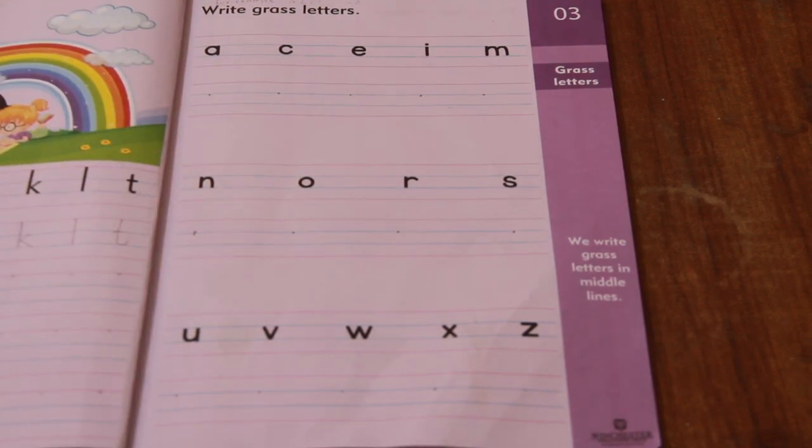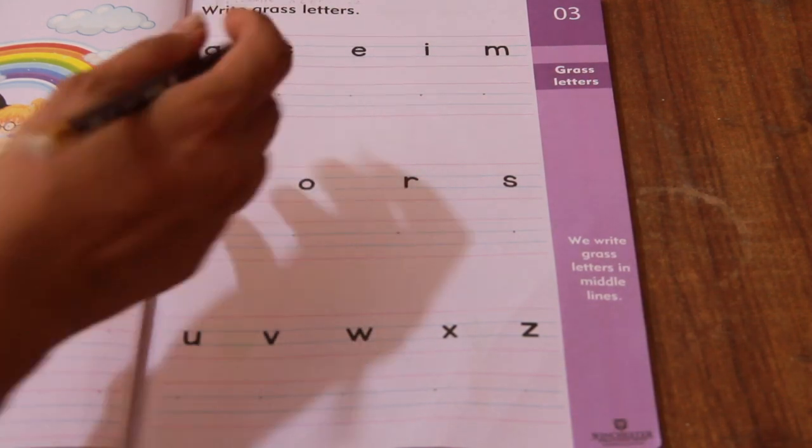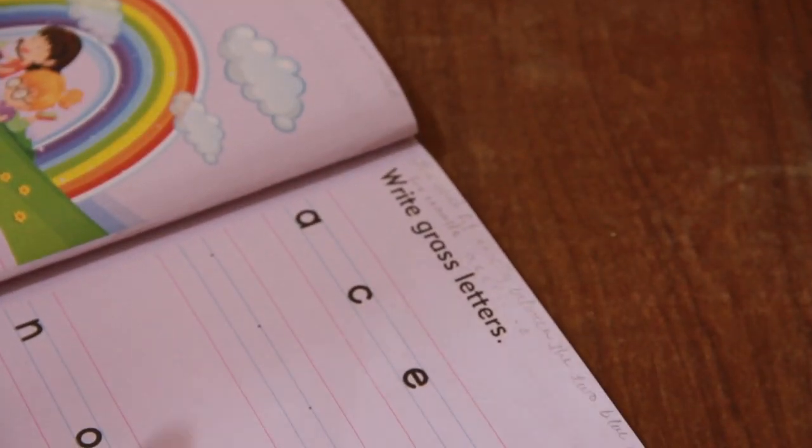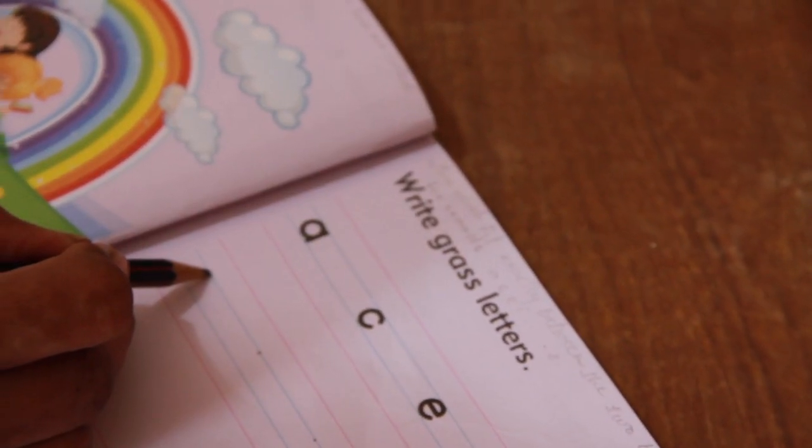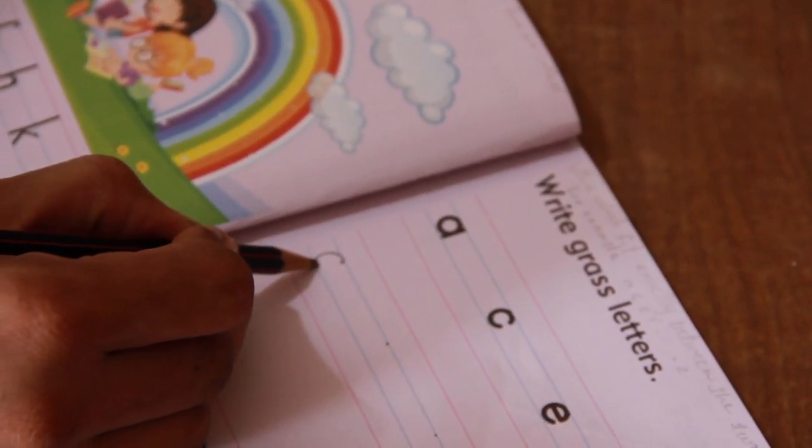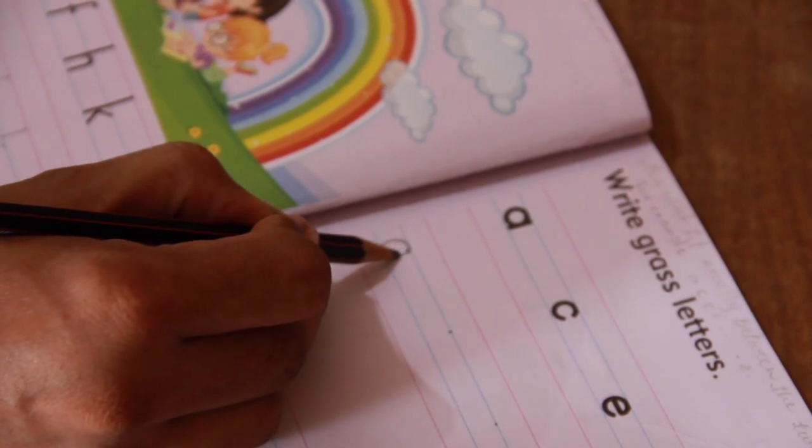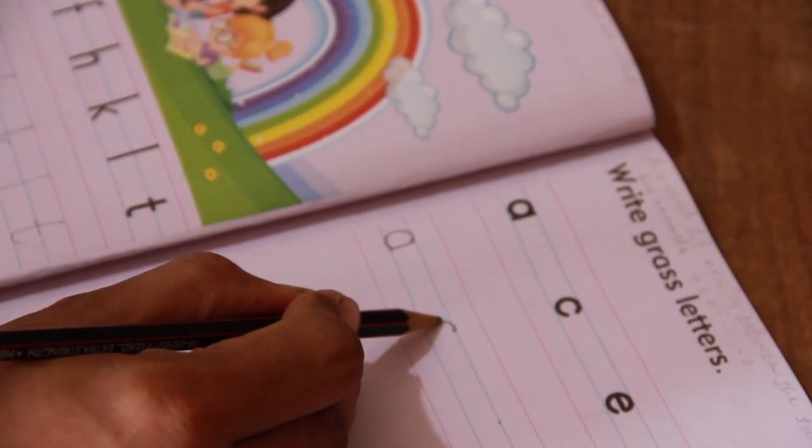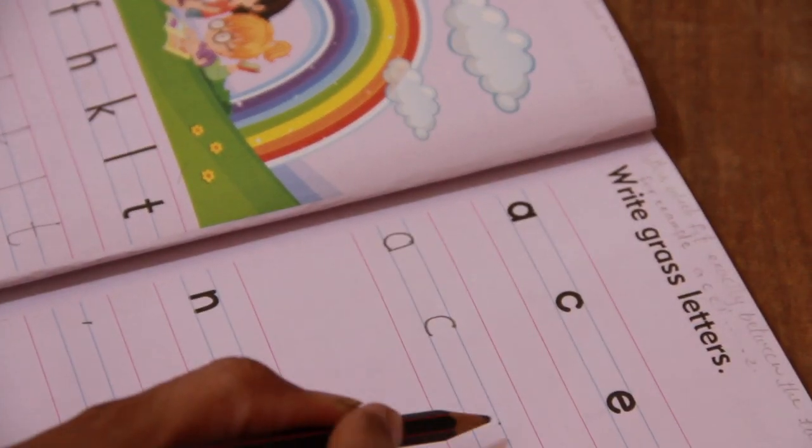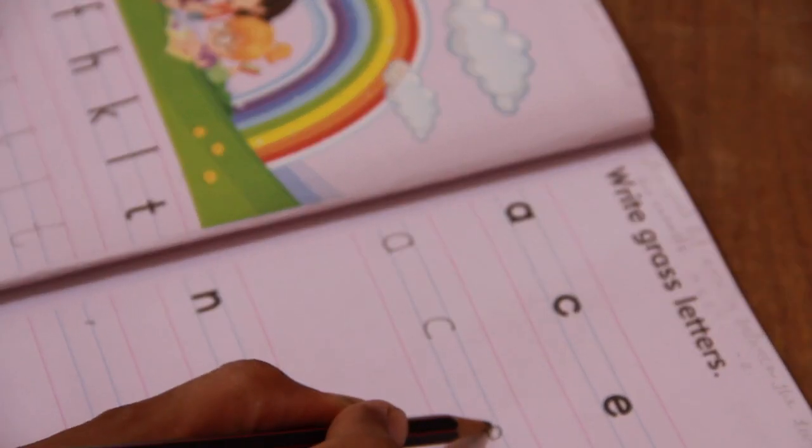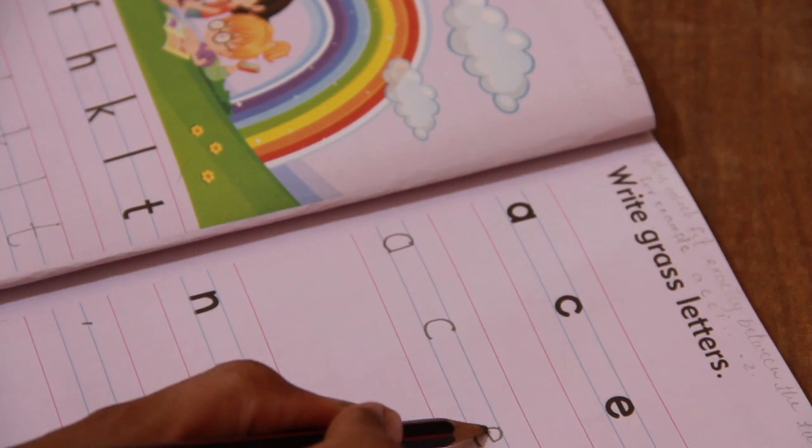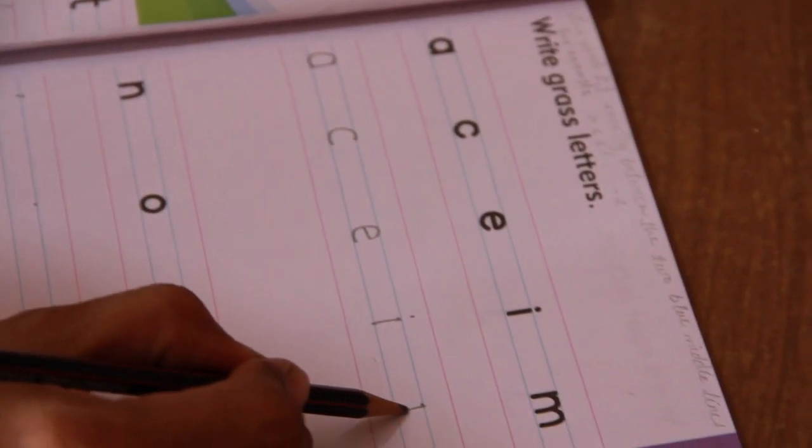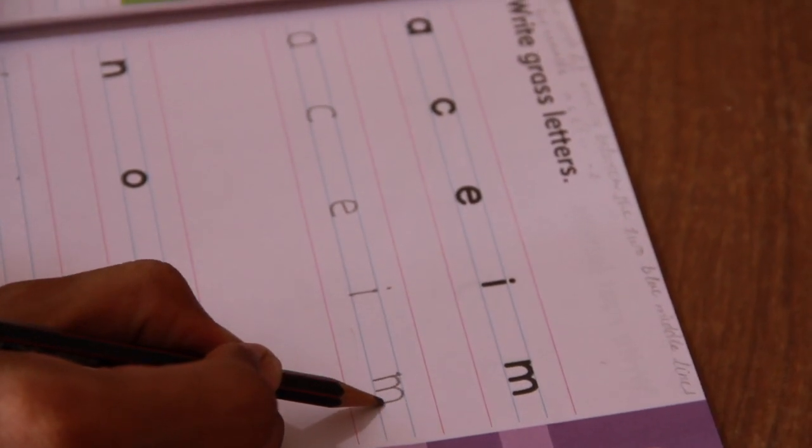Let us start the work. You have to write like this. Start from here and end over here in these two lines. A, C, do the work same as I am doing. E, I, M.